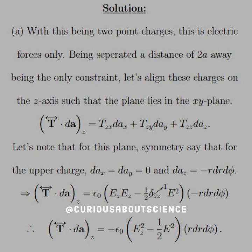We have ε₀(E_z E_z - ½δ_zz E²), which cancels to E², times the da_z component. Again, negative since it's down with respect to the positive charge at the top. And of course, now we just have this expression, which is -ε₀(E_z² - ½E²) rdr dφ.